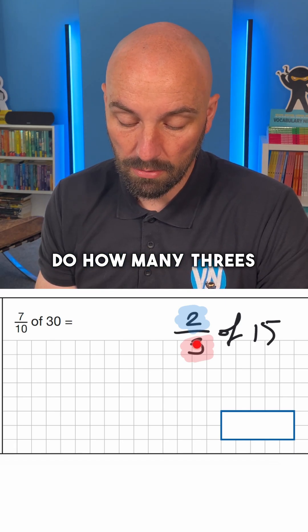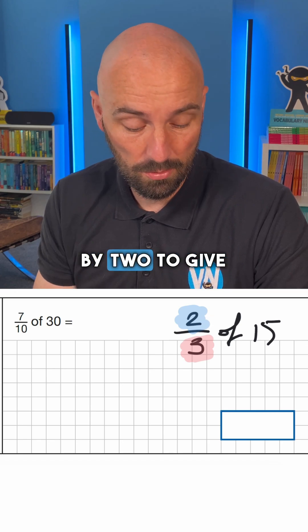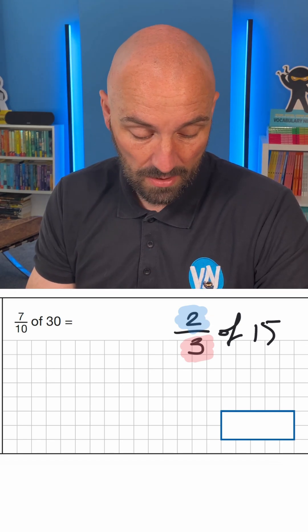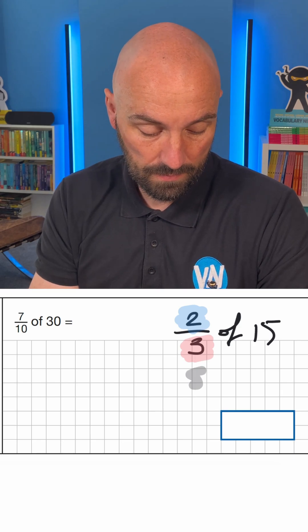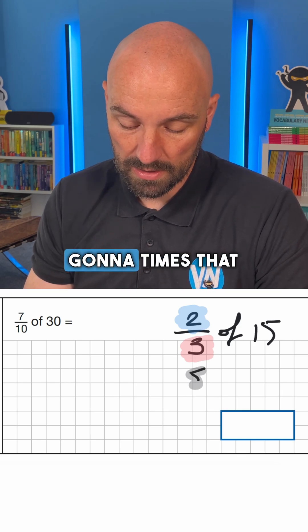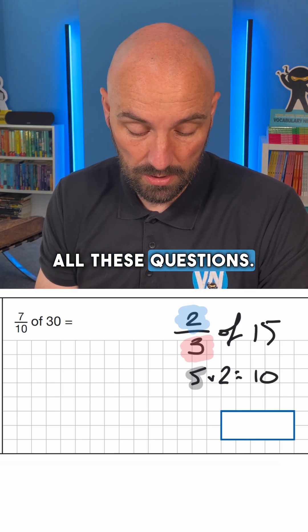Very simple. So we're going to do, how many 3's are in 15? That's 5. And then we're going to times 5 by 2 to give us 10. And that would be the answer. So how many 3's are in 15? There's 5. And then we're going to times that by 2 to give us 10. So we can just apply that to all these questions. Let's have a go.